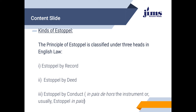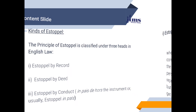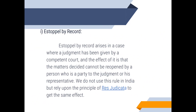The principle of Estoppel is classified under three heads in English law: Estoppel by record, Estoppel by deed, and Estoppel by conduct — also called Estoppel in pais.